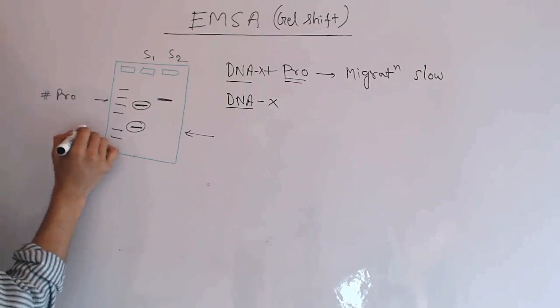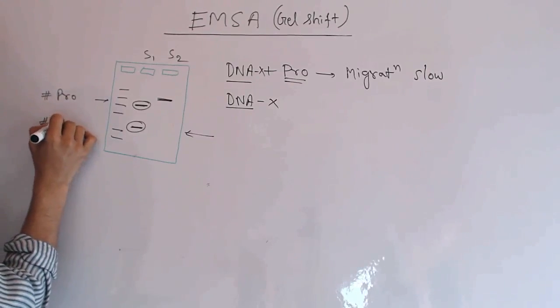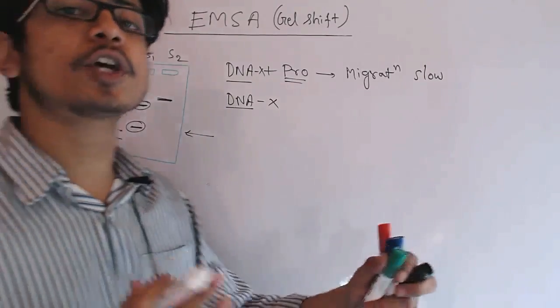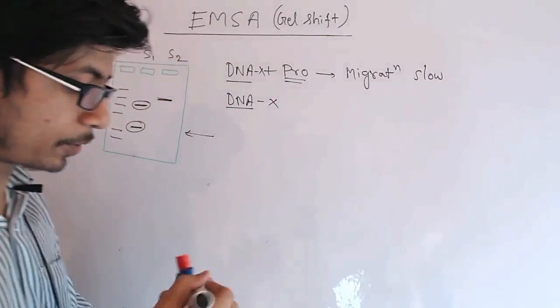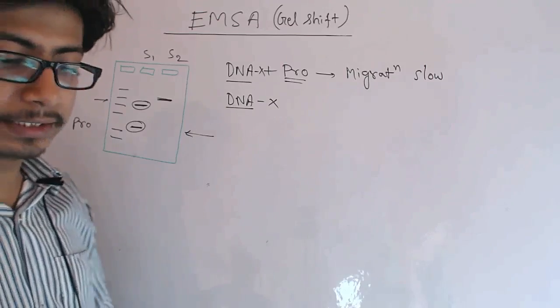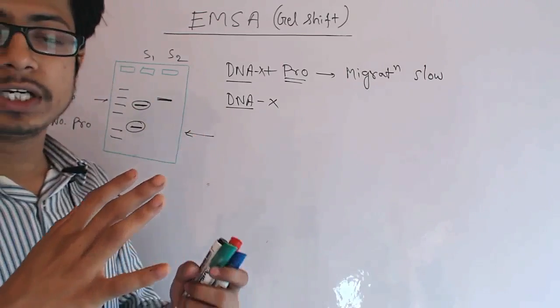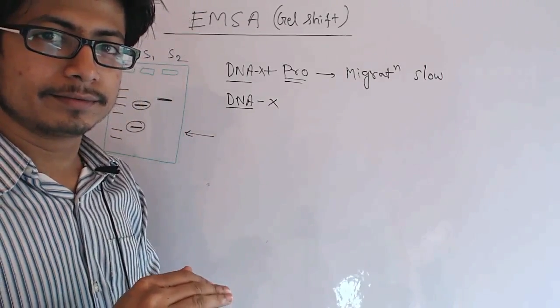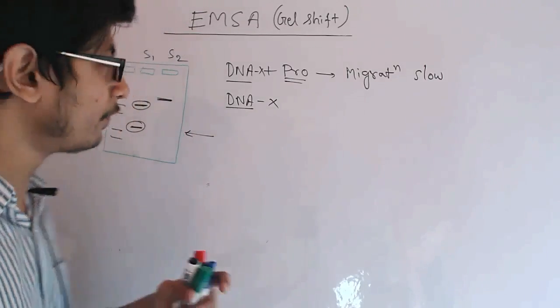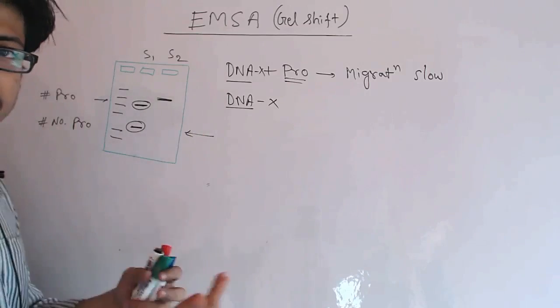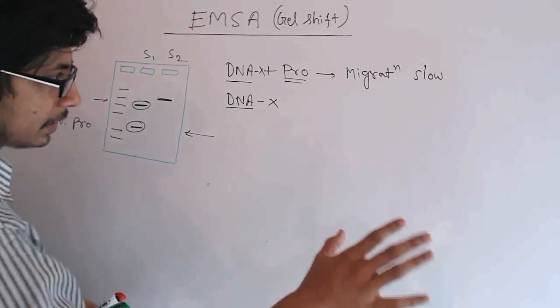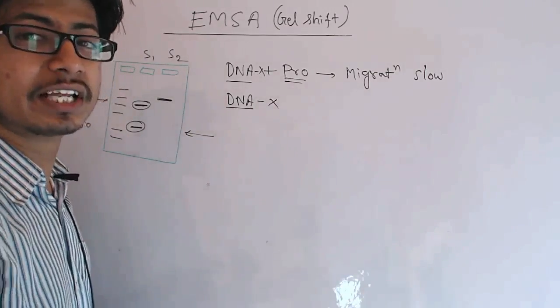So if we take two snapshots or two conditions when we run this process, first only with the DNA and then we run it with unknown situations, we can find out whether it is a naked DNA running or a protein-attached DNA running.